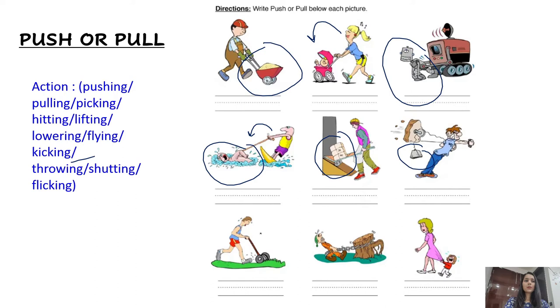In the next case, this person is pushing the lawn mower so the lawn can be mowed, so this is a push. In the next case, the person is pulling this trunk using the iron belt from the ground, so this is a pull.